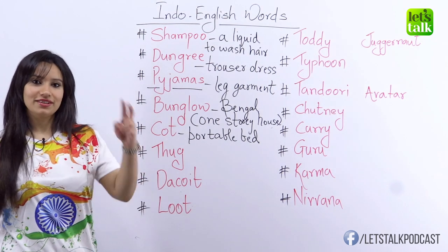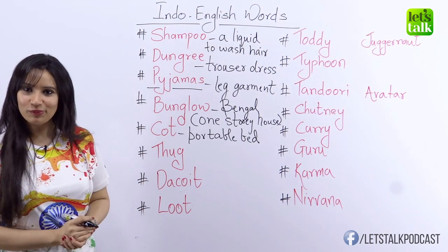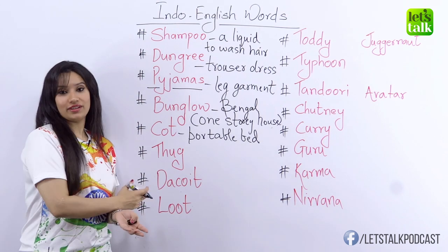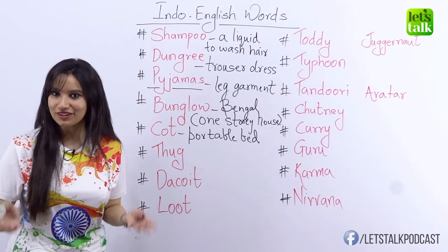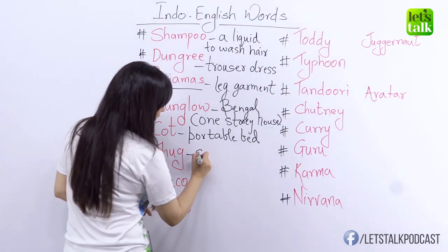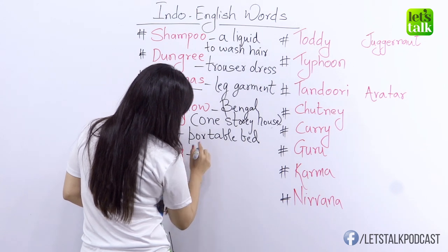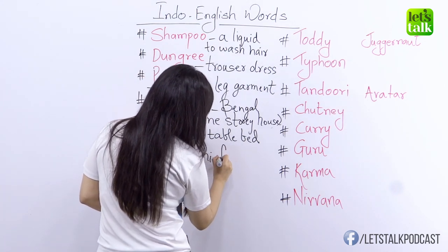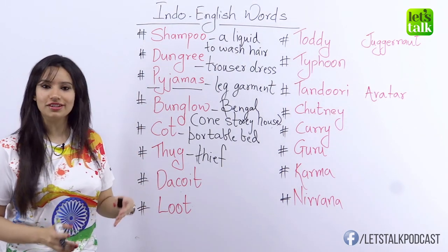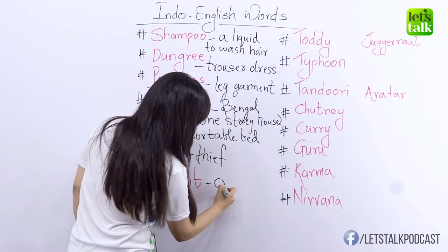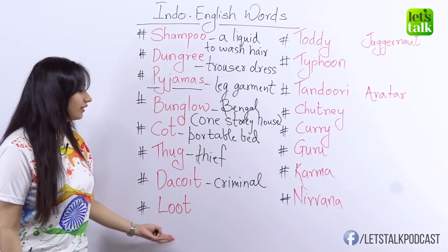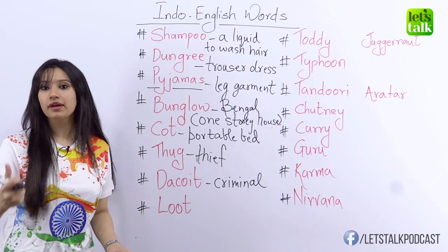The next word is thug, and with this we enter the criminal branch. Thug means a person who is a thief. A Britisher would call it 'thug' but an Indian would say 'thug' since Britishers don't have the phonemic sound 'thu.' A higher-level thug who is part of an organized criminal group is called a dacoit. And what do dacoits do? They loot people, which means they steal from them forcefully.